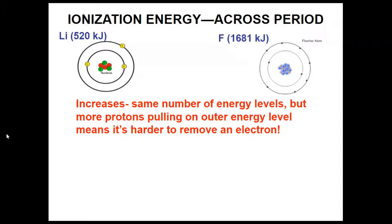So fluorine is like a bodybuilder, and lithium is like a baby. It's much easier to take something from a baby than a bodybuilder. Fluorine's protons keep a really good grip on those valence electrons — it's very hard to take an electron from fluorine. That's because it has a very strong nuclear charge, with lots of protons.